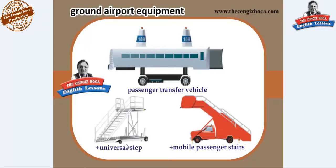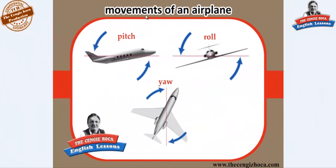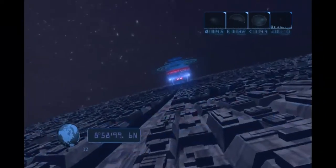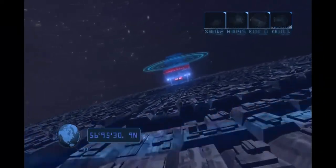Ground airport equipment: passenger transfer vehicle, universal step, mobile passenger stairs. Movements of an aeroplane: pitch, roll, yaw. Demonstrate turning left.